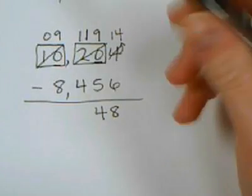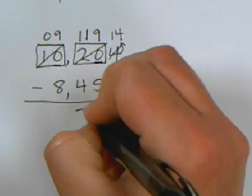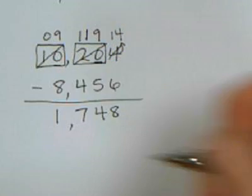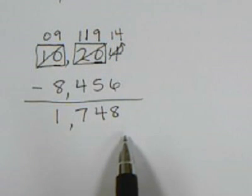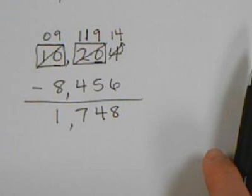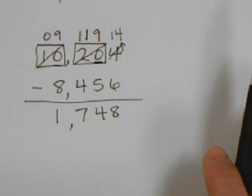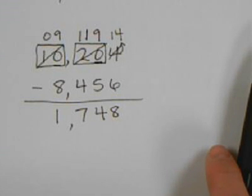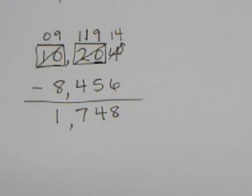Now we can subtract. 11 minus 4 is 7, 9 minus 8 is 1, 0 minus nothing is 0. So 1,748. This is how we do subtraction with regrouping. I have the words for the rap also on the website. Encourage your students to practice it and have fun with it. Thanks so much.